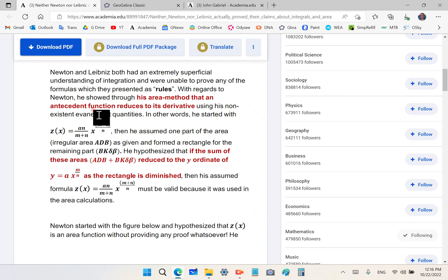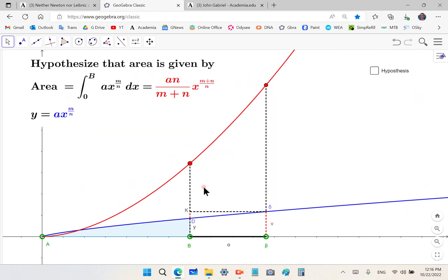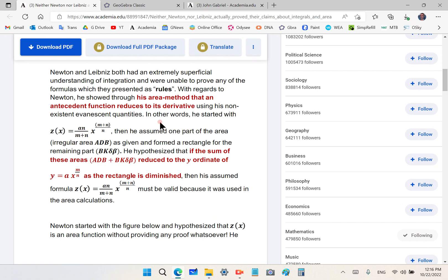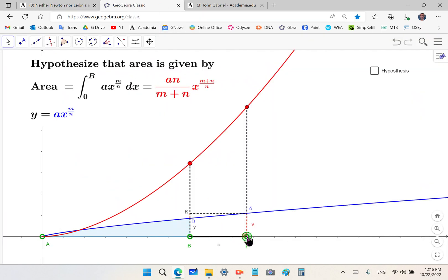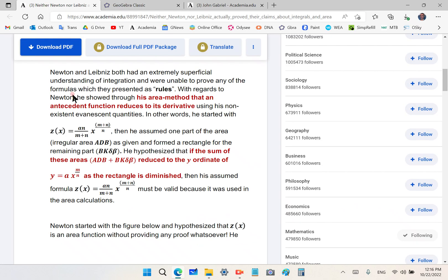He started off with rules and then he showed that his area method reduces to an antecedent, well is an antecedent function that reduces to its derivative. That's what it means when he finds Y in terms of the other formula and Y turns out to be the expression A X to the M over N, as the rectangle is diminished. As this rectangle here is diminished.